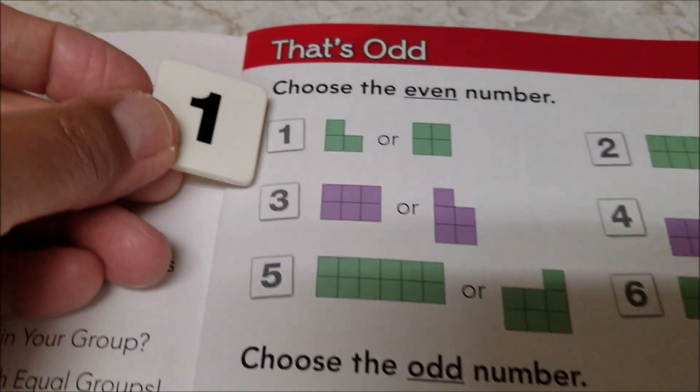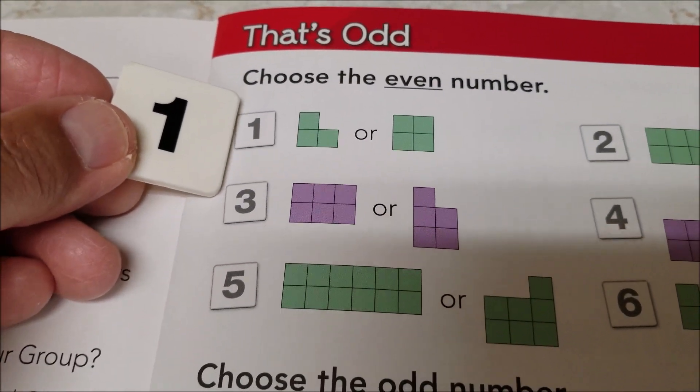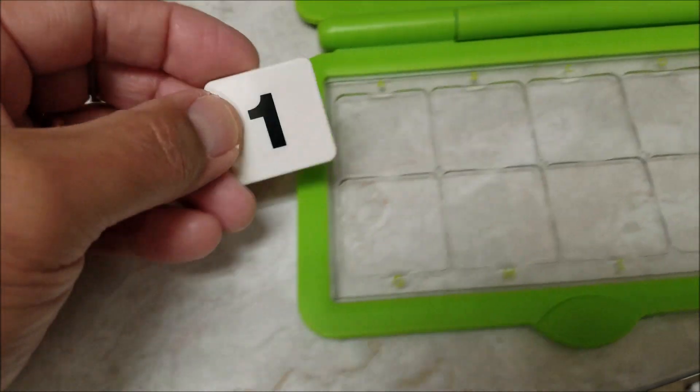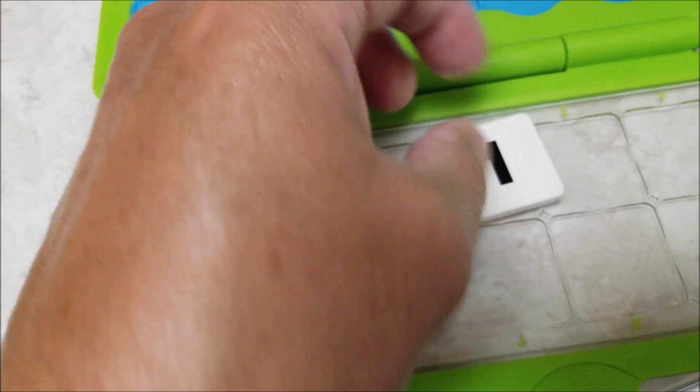Here's the first tile, and we're choosing the even number. So we want to choose four, and we come down here, and four is going to go into D. So A, B, C, and D.